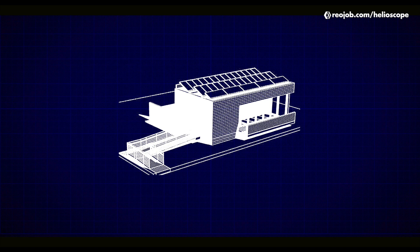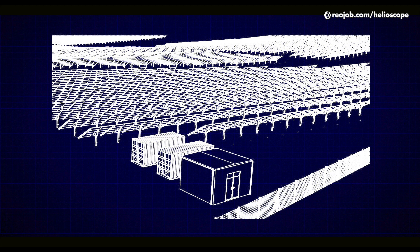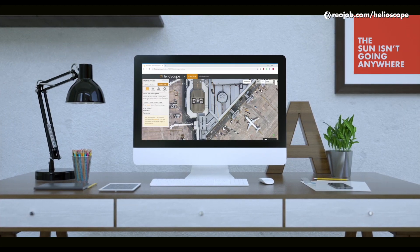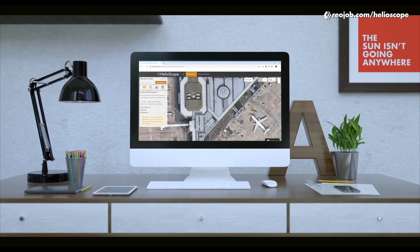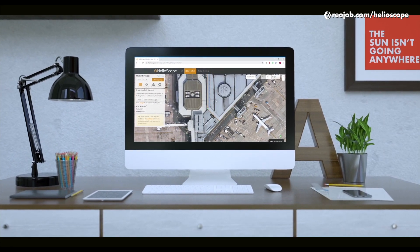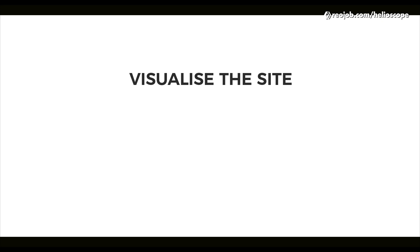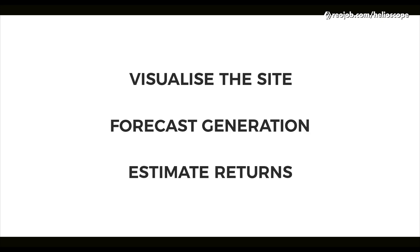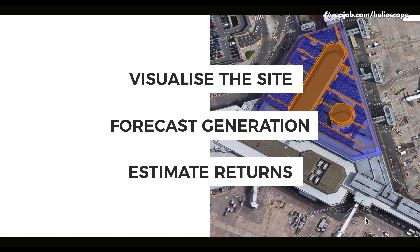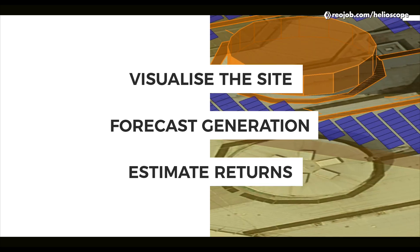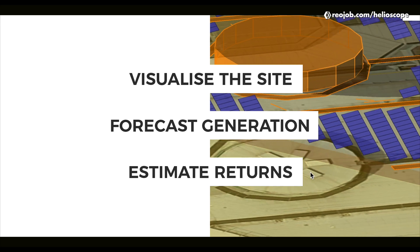There are many kinds of solar designs, from small residential plants to large-scale solar parks. However, one thing all professional solar plants have in common is that they start right here on a computer screen. Solar designing is an art that helps the client or site owner understand the feasibility of installing a solar plant. It helps them visualize the site, forecast the energy generation, and estimate the returns on investment. Having a visual and graphical understanding of the site helps the client confidently make the decision to switch to solar energy.